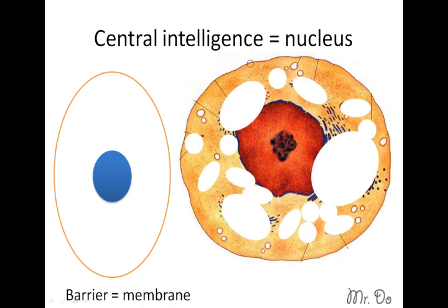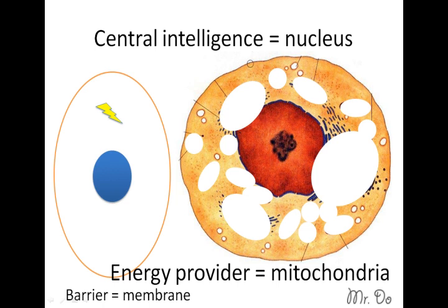The nucleus is the big red thing — not the one in the middle, not the black part, the big red thing. Now our city is going to need some kind of power supply, so that would be like a mitochondria inside a cell.